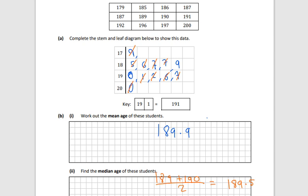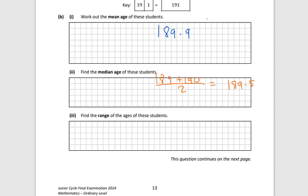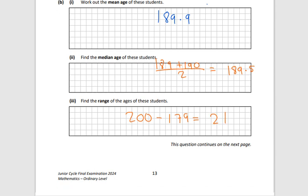The range then is just the biggest minus the smallest. That's going to be 200 minus 179. And I should get, we should get 21 there. That's the range.